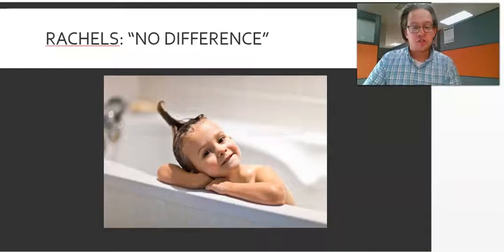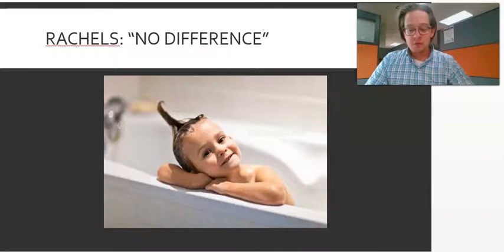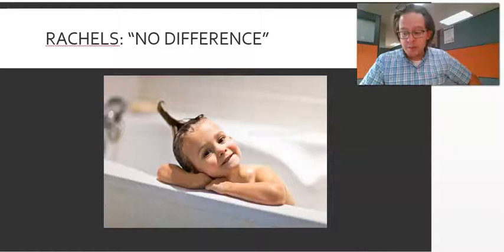So he tells us that there are two people: there's Smith and there's Jones, and this will be the bathtub stories. So Smith, an individual who is named Smith, stands to gain a large inheritance if anything should happen to a six-year-old cousin.